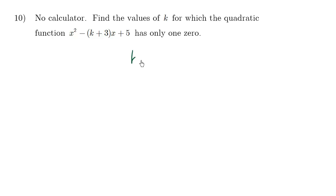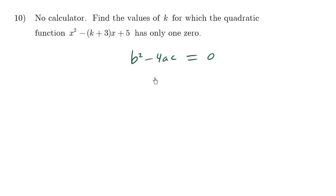We want to set the discriminant b squared minus 4ac equal to zero. If the discriminant value b squared minus 4ac was less than zero, there would be no solutions. If it was greater than zero, there would be two solutions.